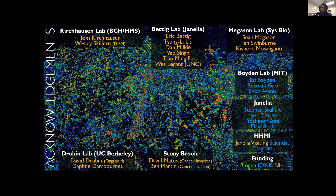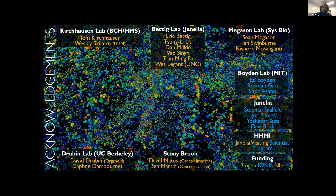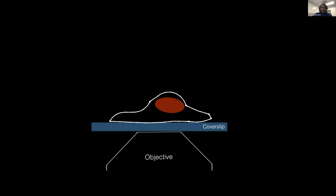We also work with Ed Boyden's group on combining a lattice light sheet microscope with expansion microscopy, so you can get scalable super-resolution on a tissue scale. The only introduction you need for the next few minutes is this: you can take a beautiful cell on a cover slip. If you want to image the ventral dynamics attached on the surface, you don't need anything other than TIRF.